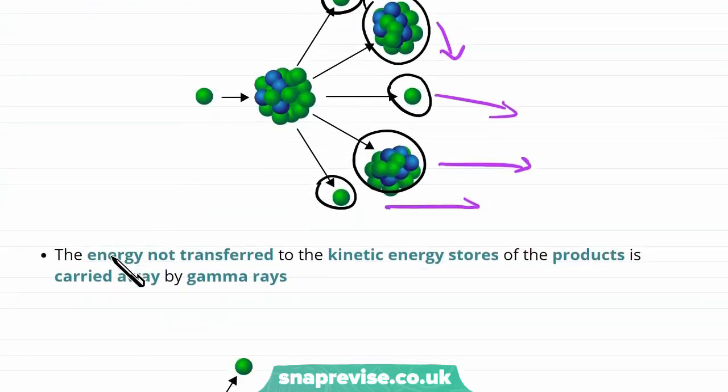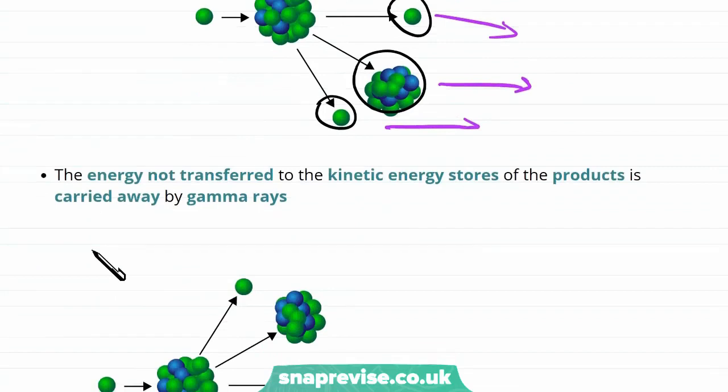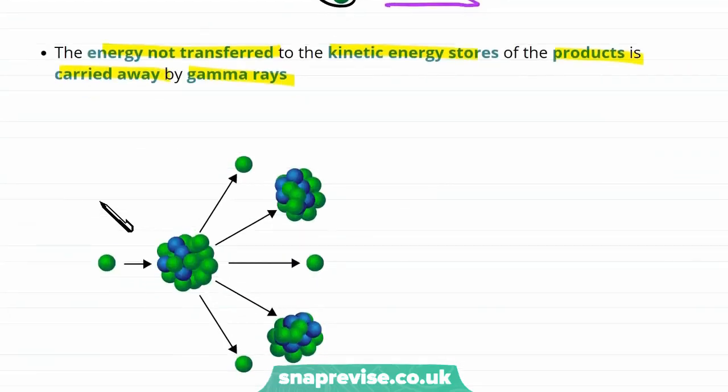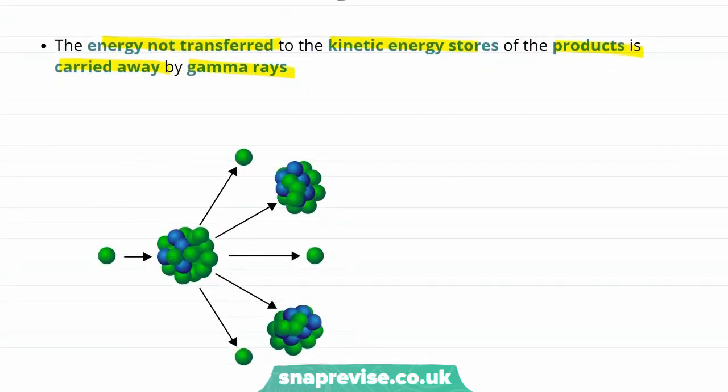But not all of the energy is converted to kinetic energy. The energy not transferred to the kinetic energy stores of the products is carried away by gamma rays. So that extra energy is carried away by electromagnetic waves which are gamma rays.